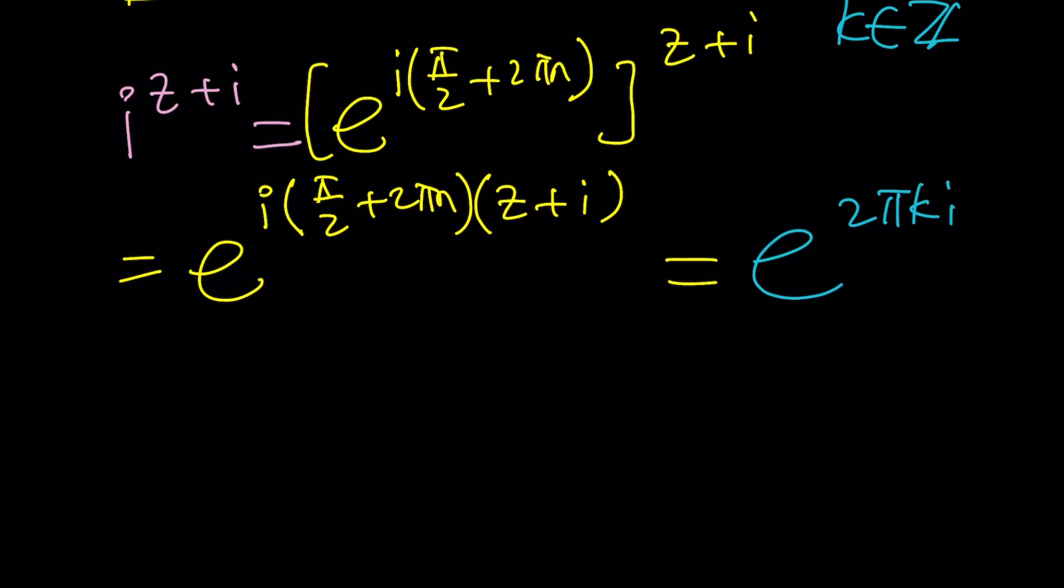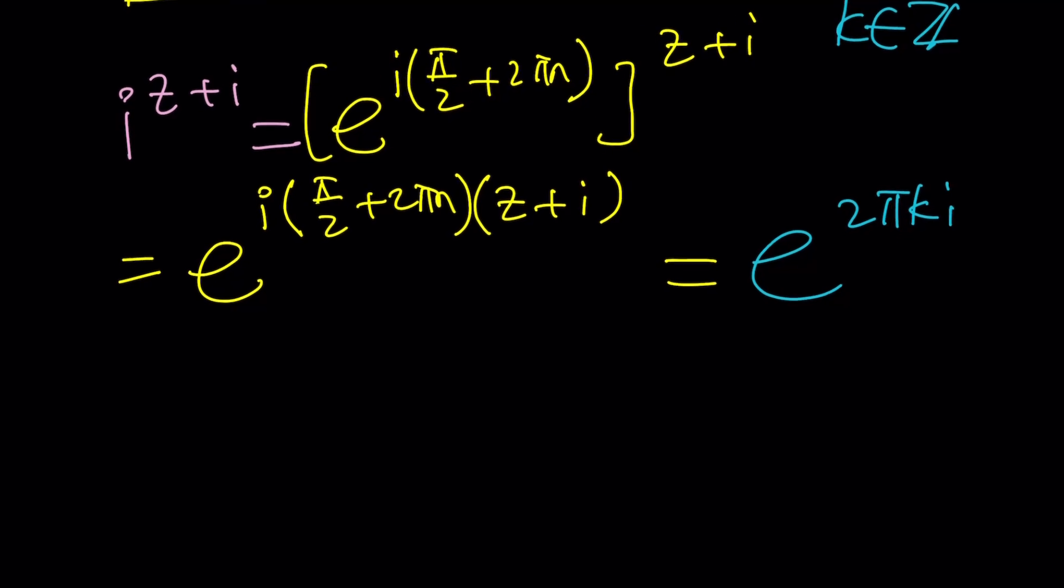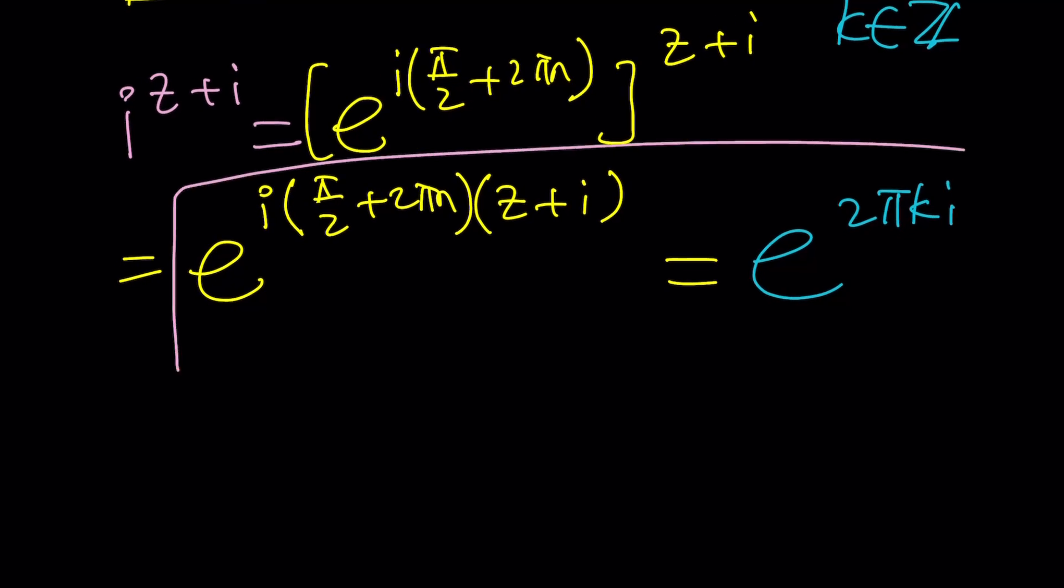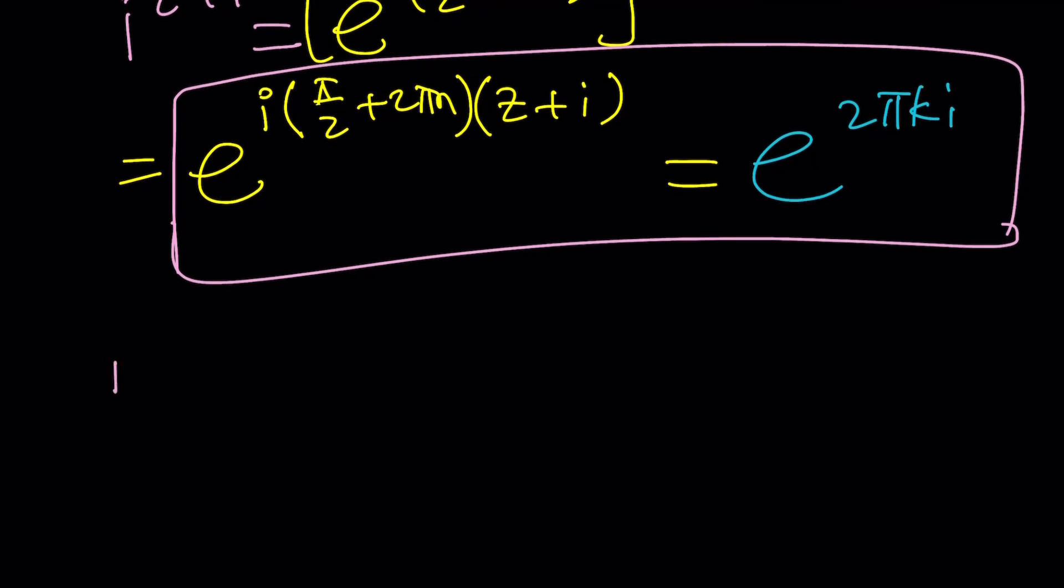Let's see how we can solve this. We have e's on both sides so we'll compare the exponents. i times (π/2 + 2πn) times (z + i) equals 2πki.